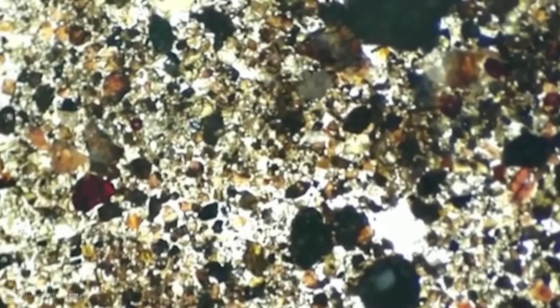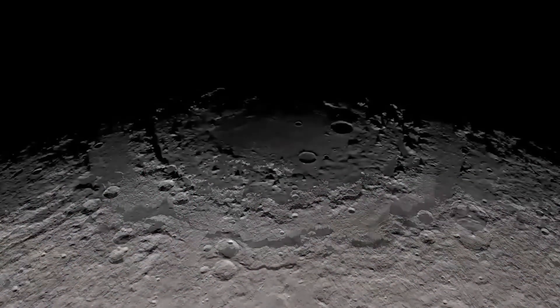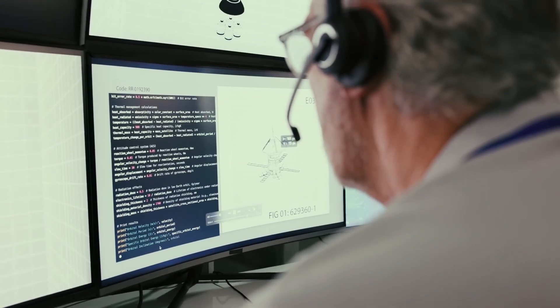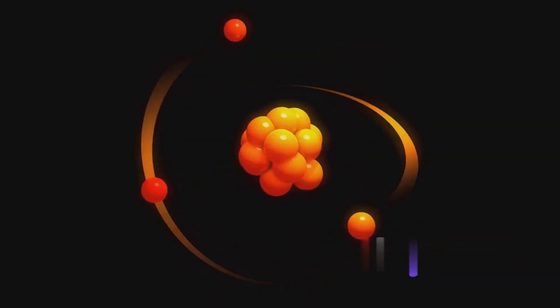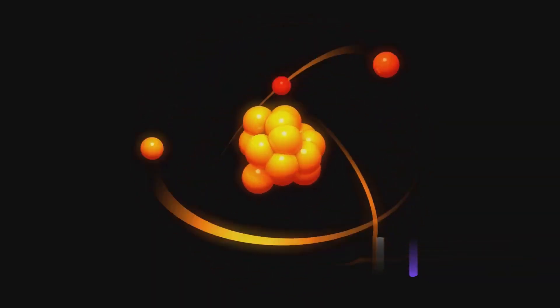It was tiny, almost microscopic. But this grain of lunar dust contained something the world had never seen: a brand new mineral. Scientists named it changicite. Why? In honor of the mission. But this wasn't just some obscure crystal. Inside it, they found helium-3, a rare isotope scientists have dreamed about for decades.